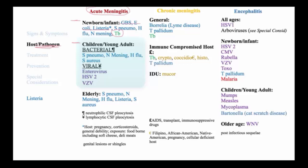In older children and young adults, the spectrum shifts slightly to be represented mainly with strep pneumoniae, Neisseria meningitidis, H. flu, and possibly staph aureus. Viral pathogens are also included in the differential, predominantly enterovirus, also HSV-2, and varicella zoster virus.